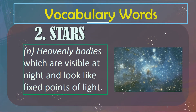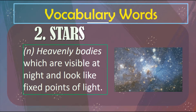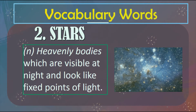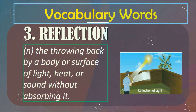Number two: Stars. Stars are heavenly bodies which are visible at night and look like fixed points of light, and they also twinkle. There are millions of stars in the sky.